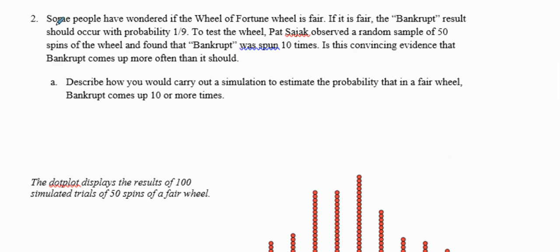Some people have wondered if the Wheel of Fortune is fair. If it is, the bankrupt result should come up 1 out of 9 times. To test this, a random sample of 50 spins of the Wheel of Fortune was observed, and bankrupt was spun 10 times. Is this convincing evidence that bankrupt comes up more often than it should?